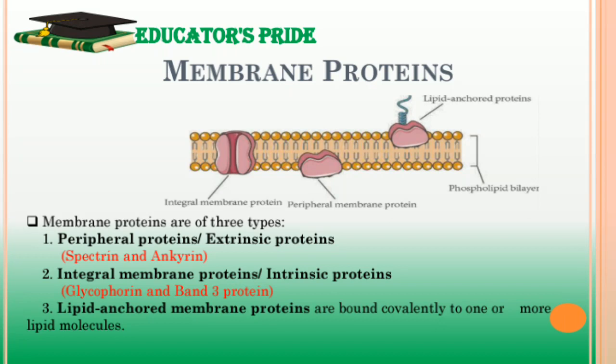Transmembrane proteins are characterized by transmembrane alpha helices. Lipid-anchored membrane proteins are bound covalently to one or more lipid molecules.